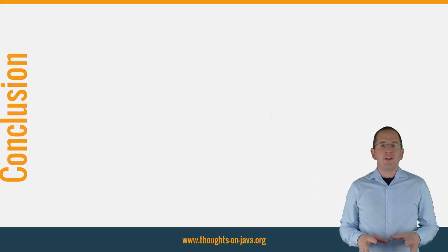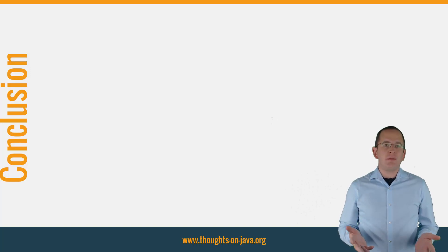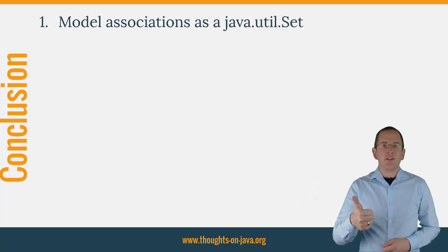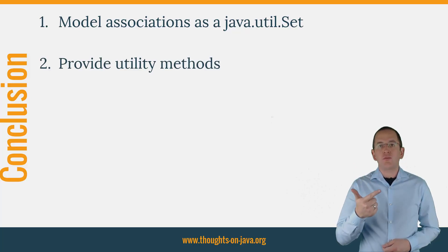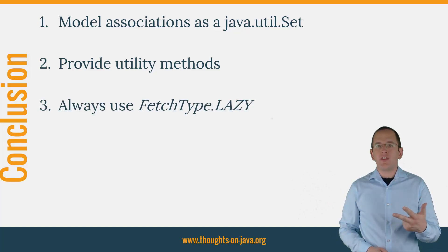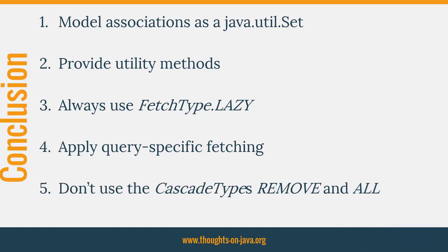You can find lots of examples of many-to-many associations in the real world, and you can easily map them with JPA and Hibernate. Unfortunately, these simple mappings hide a few pitfalls, which you can avoid by following these 5 best practices: Number 1, model associations as a java.util.Set. Number 2, provide utility methods to add or remove an entity from an association. Number 3, always use fetch type LAZY, which is the default, to avoid performance problems. Number 4, apply query-specific fetching to avoid n+1 select issues. And number 5, don't use the cascade types REMOVE and ALL.